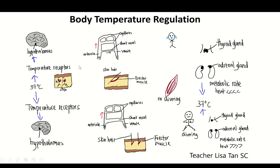Hi, today we are going to learn body temperature regulation. The normal body temperature is 37 degrees Celsius. So when you do vigorous exercise, your body temperature increases.